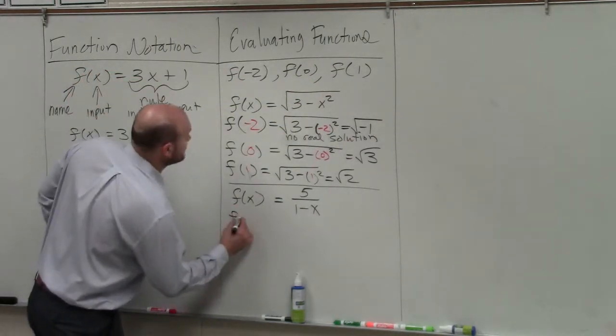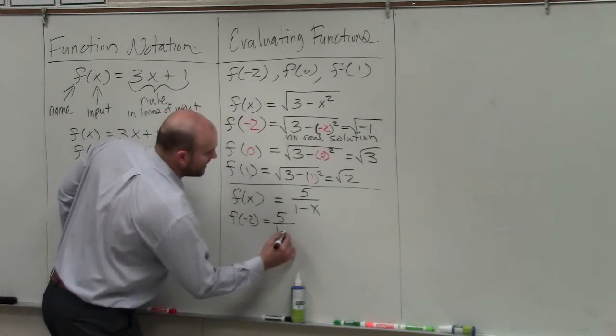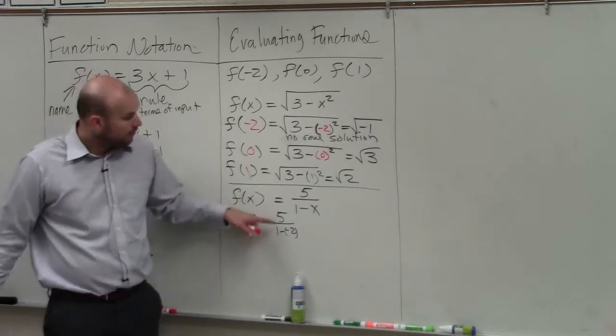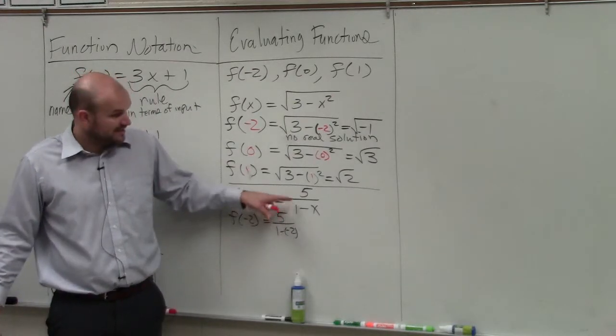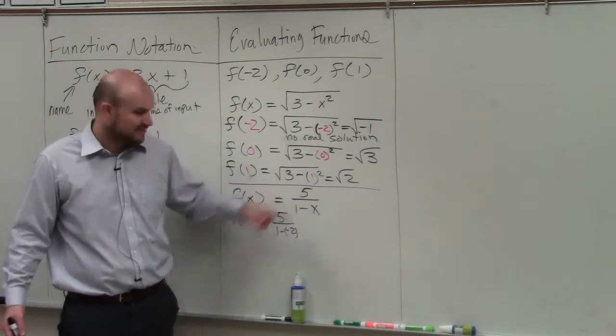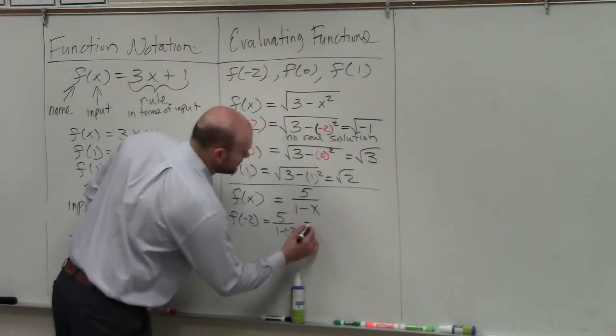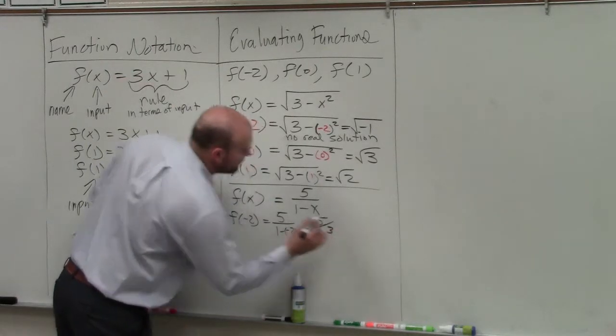So if I was going to do f of negative 2, that equals 5 divided by 1 minus negative 2. 1 minus negative 2, right? It's 1 minus x. What is x? x is negative 2. So it's 1 minus negative 2. 1 minus negative 2 is going to be a positive 3. So that equals 5 thirds.